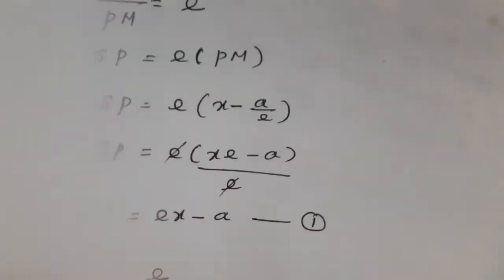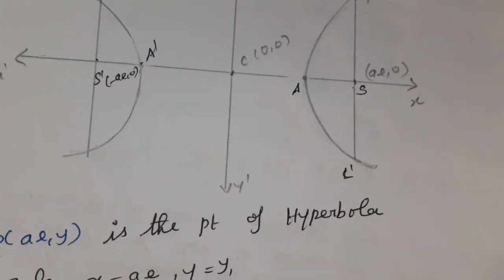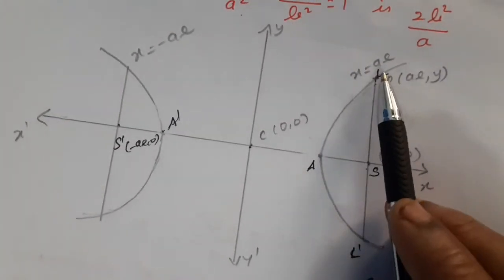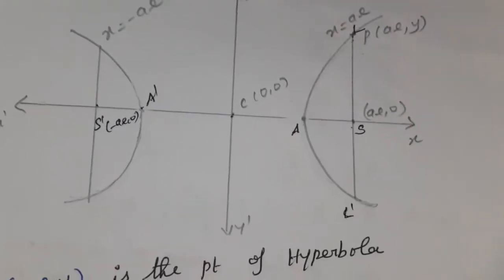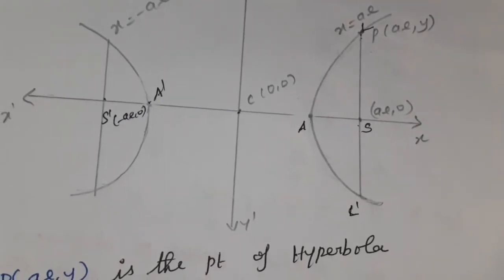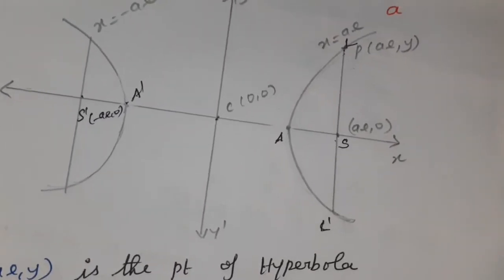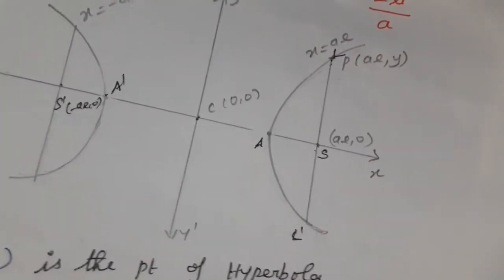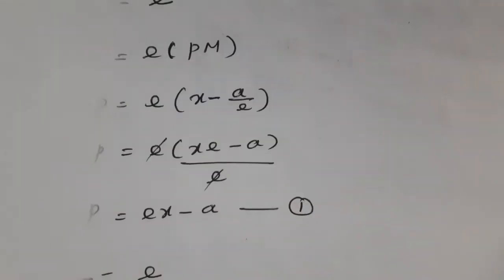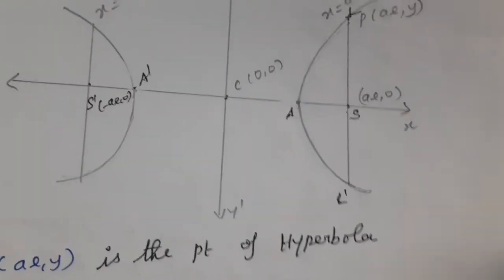This is a very important sum, but it is very easy. Draw the diagram, plot the points (ae, y) on the hyperbola, and you can easily find the result. Next question is a similar model — we are going to prove one more result for the 7th question, which is also a very important sum.